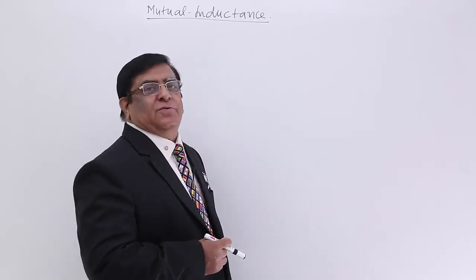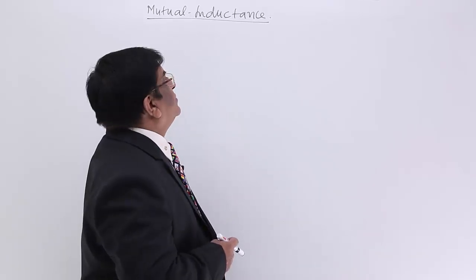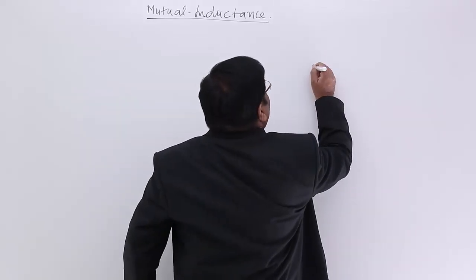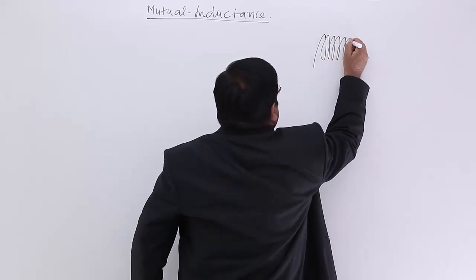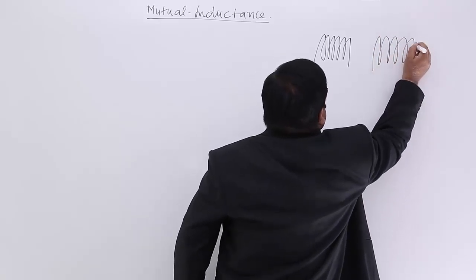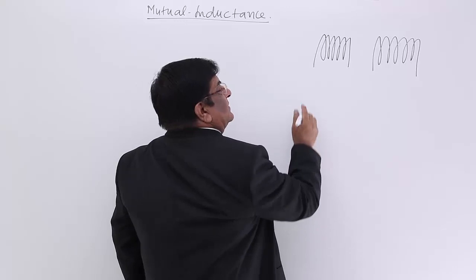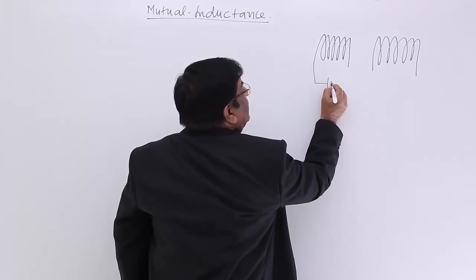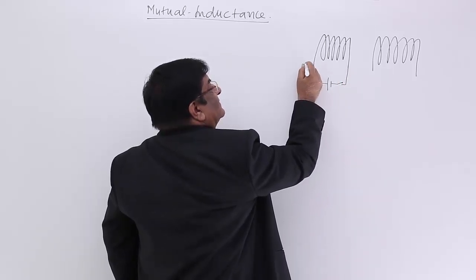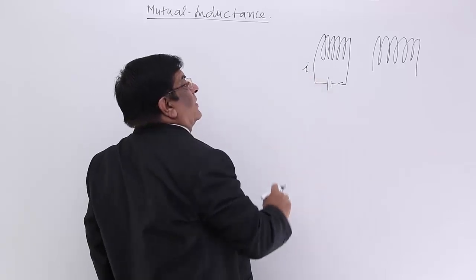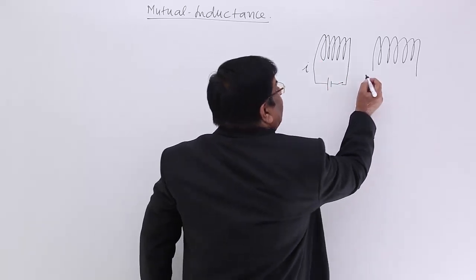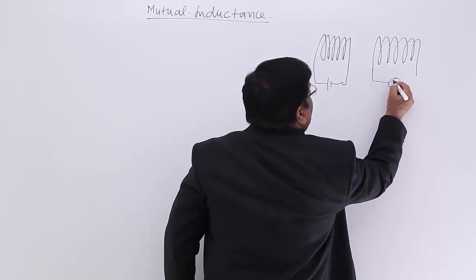Mutual induction is a phenomenon in electromagnetic induction. In mutual inductance there are two coils — one coil is carrying current, and there is another coil placed in the neighborhood. We give current to one coil only, and this is a variable current. When there is on/off of this current, when the current is changing, we find that a current starts flowing in the second coil.